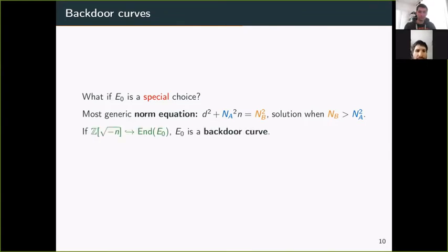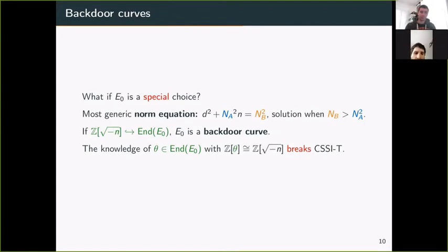The resulting n must have the property that ℤ[√-n] is embedded in the quaternion algebra. If that's the case, after a few iterations this can be done easily. If ℤ[√-n] is in the quaternion algebra, you can look for a specific maximal order containing ℤ[√-n], and that E₀ will be the backdoor curve. If you know this endomorphism θ in E₀ such that ℤ[θ] is isomorphic to ℤ[√-n], that breaks the CSSI problem.